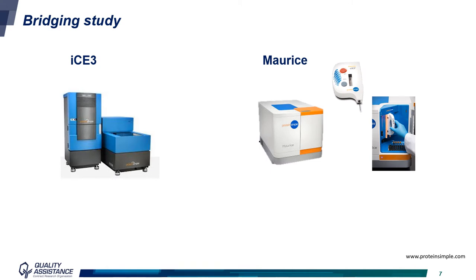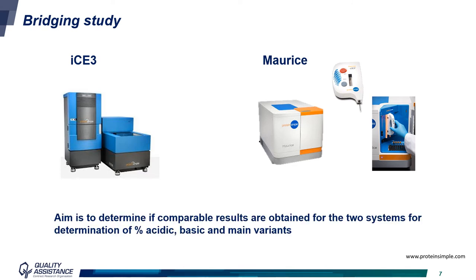Quality Assistance has several systems for ICIEF experiments to determine the charge variant profile of monoclonal antibodies. We have in the lab two I3 systems and two MORRIS systems, commercialized by ProteinSimple. These systems are based on the same technology, but MORRIS presents the advantage of using a built-in capillary, where only the cartridge needs to be inserted in the system — as you can see in the picture — without any capillary preparation or installation, and this improves the robustness of the analysis. The aim of the study we present here is to determine if comparable results are obtained on both systems for the determination of the percentage of acidic, basic, and main variants for monoclonal antibodies.